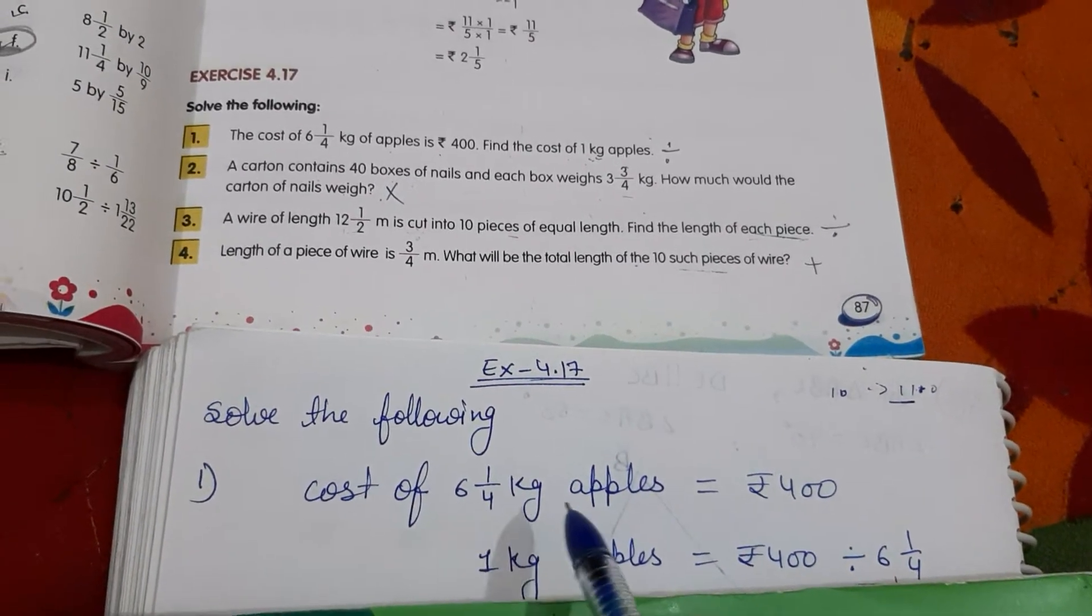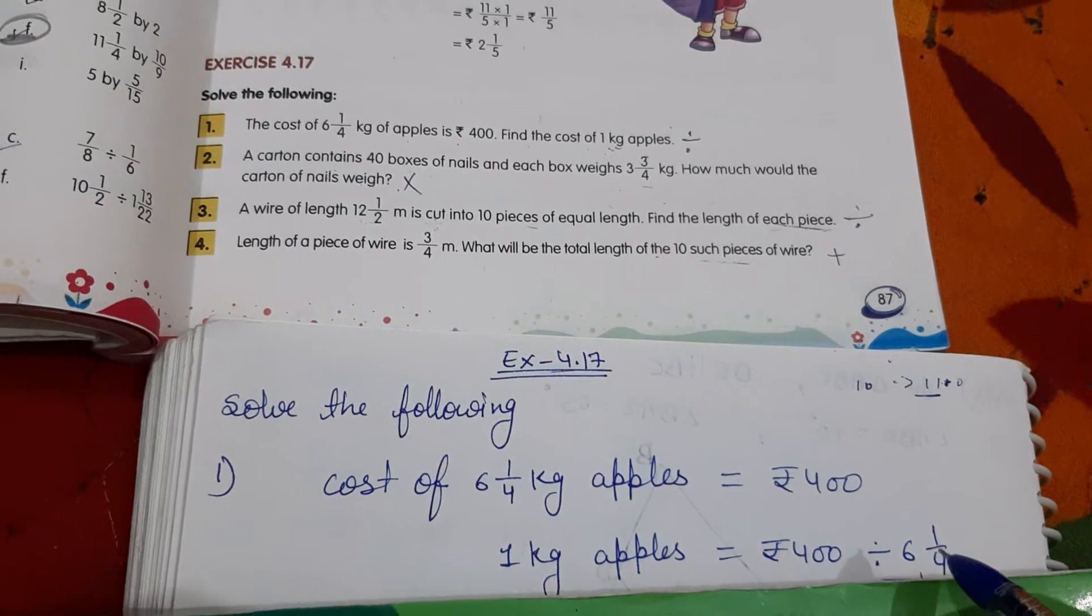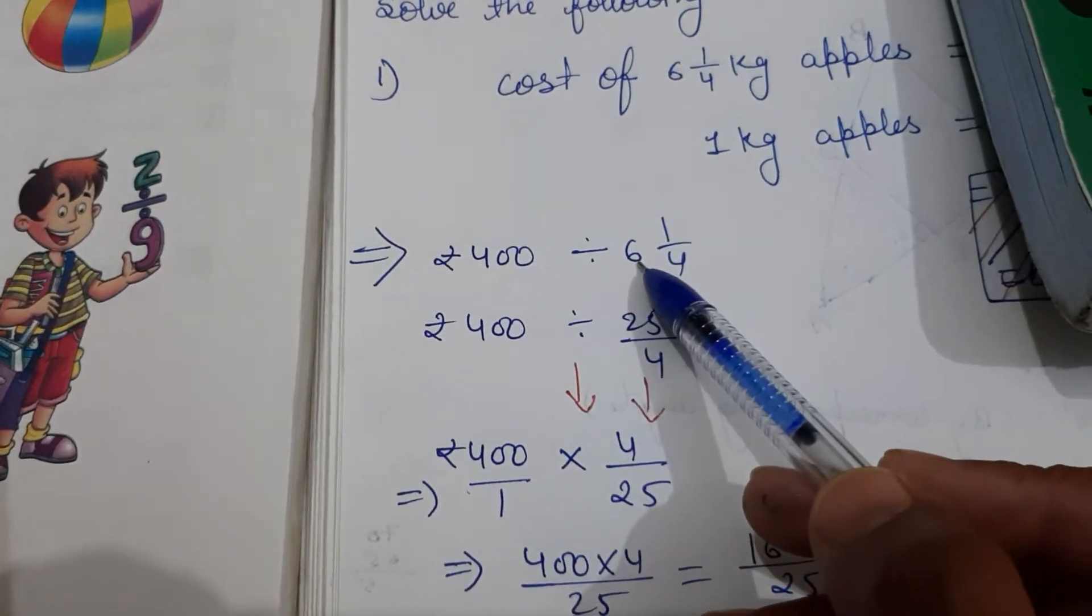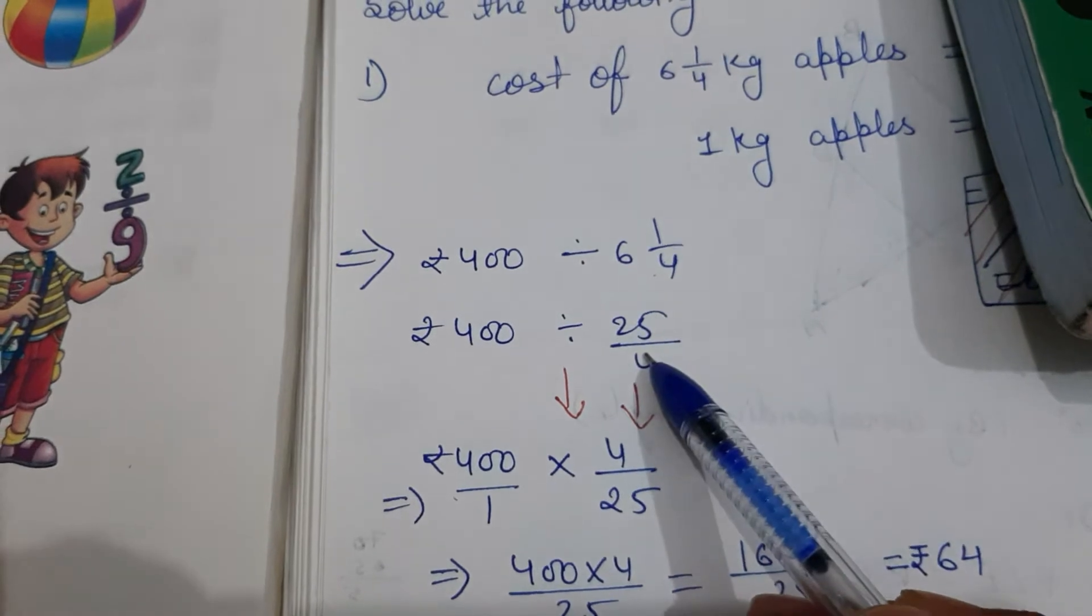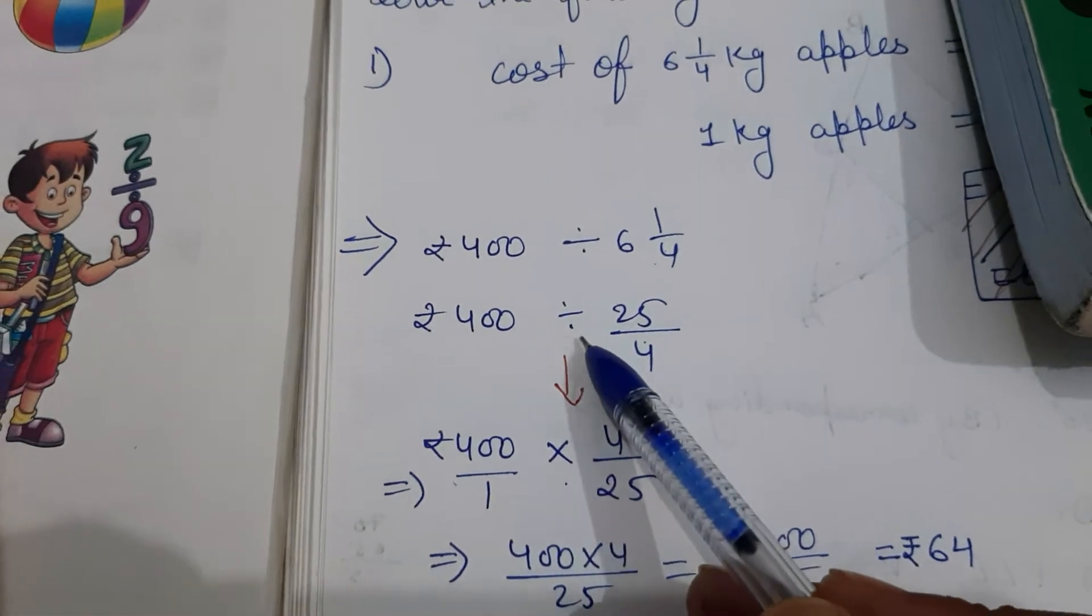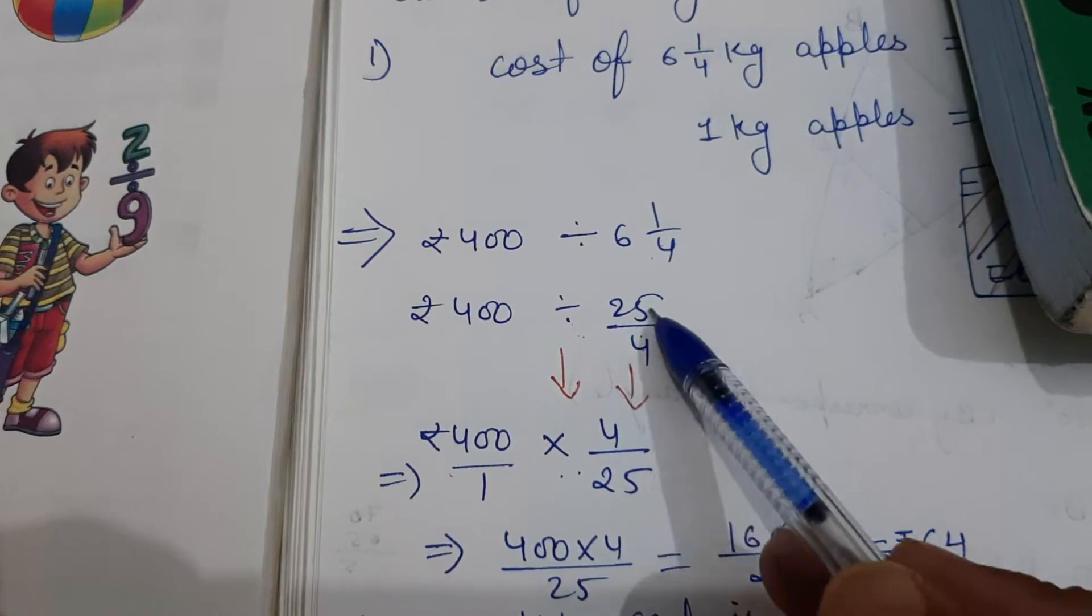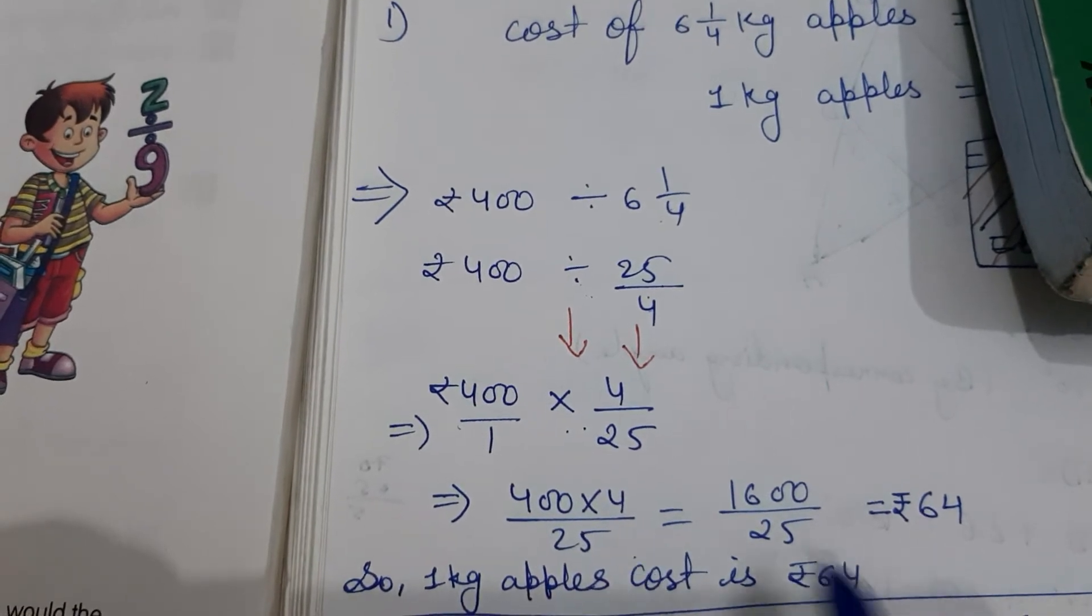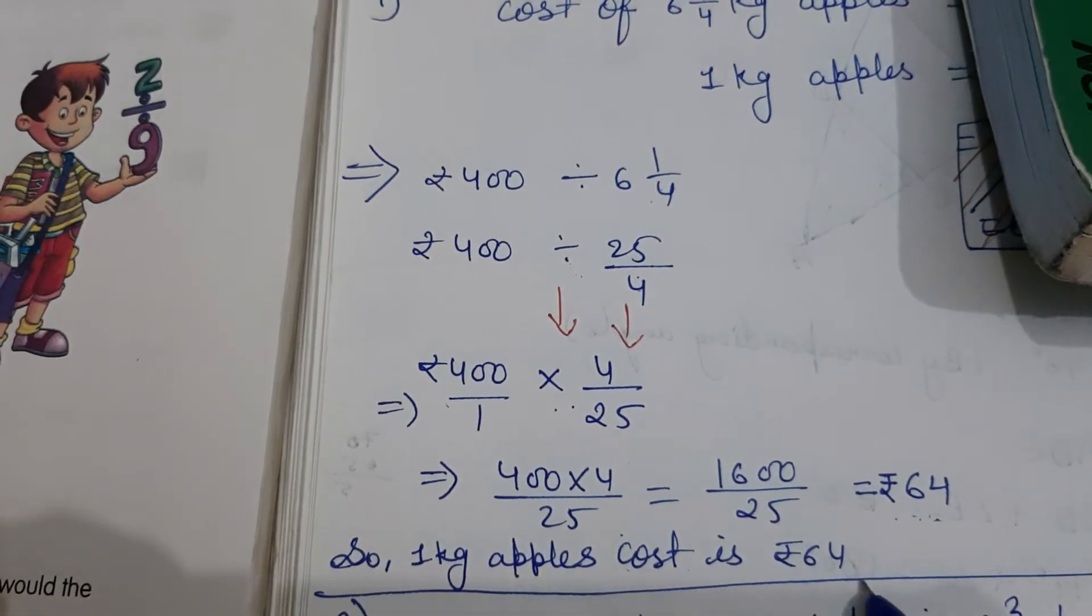Cost of 6 1 by 4 kg apples is equal to 400. So 1 kg apples is equal to 400 divided by 6 1 by 4. So now this divide. First of all, this mixed fraction we have to convert into improper fraction. After converting, then the divide sign will be changed into multiplication sign. So now 4 upon 25. 400 upon 4, it means 400 ko 4 se multiply ke divide laga 25 se. Then you will get here completely divided. How many times? 64. So 1 kg apple cost is Rs 64.